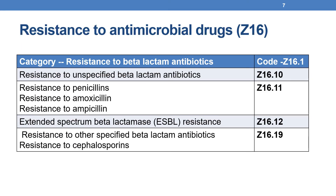Here is the list of codes from category Z16. The first is Z16.1, which mainly indicates resistance to beta-lactam antibiotics. Resistance to unspecified beta-lactam antibiotics is indicated by Z16.10, whereas resistance to penicillin, amoxicillin, and ampicillin is indicated by Z16.11. Resistance due to extended spectrum beta-lactam antibiotics is indicated by Z16.12, and resistance to other specified beta-lactam antibiotics or resistance to cephalosporins is indicated by Z16.19.